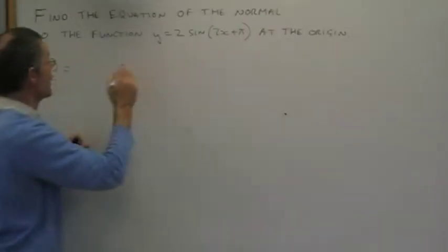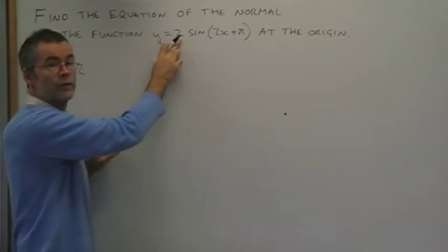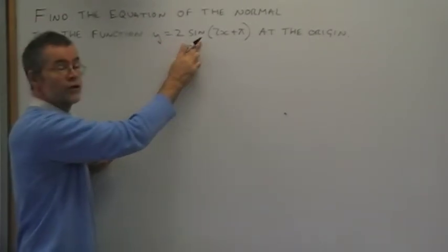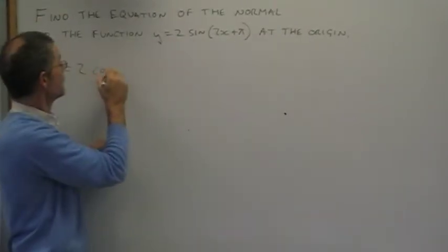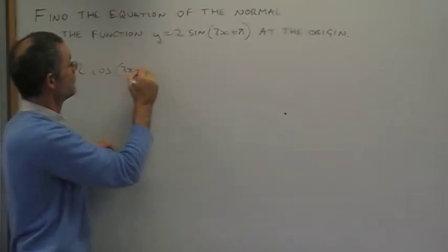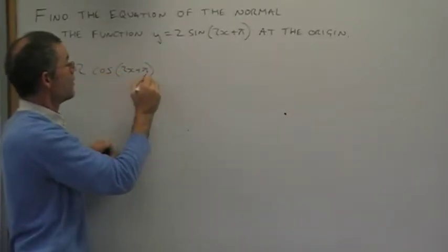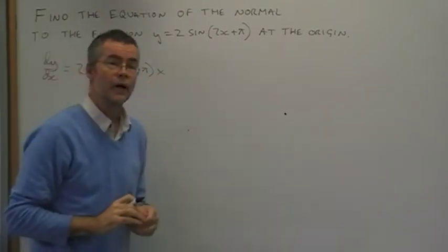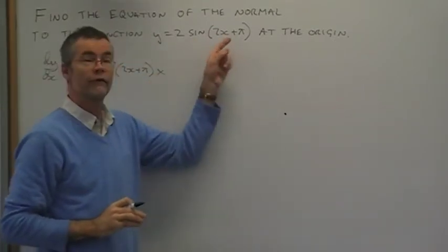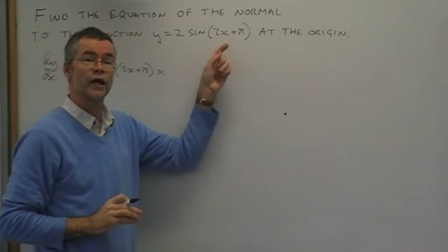Differentiate the sine: the 2 is just a multiplying factor, differentiate the sine to cos, the angle stays the same, and we have to remember to multiply by the derivative of the inside part, which in this case will be 2.